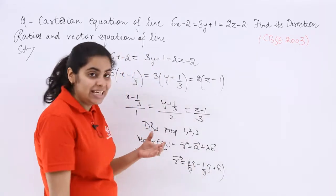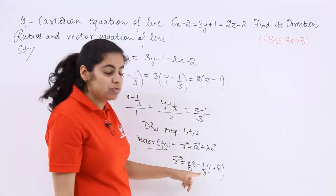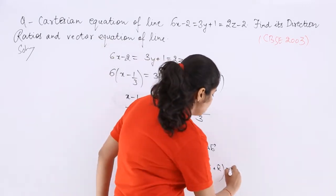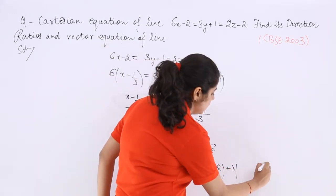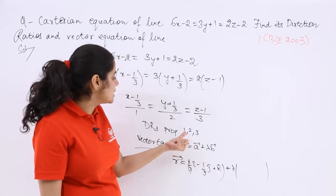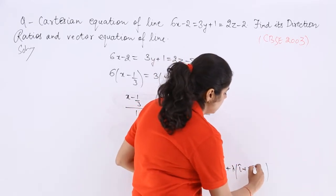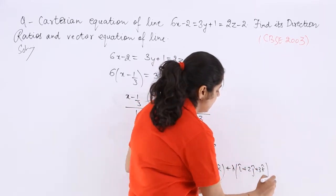Because you have to pay heed to x-x1 upon A and so on. So signs have to be paid attention to. Plus lambda times B. B is related to the direction ratios. So you see I cap plus 2 J cap plus 3 K cap.